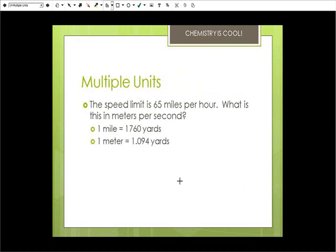Okay, so here's multiple units. The speed limit is 65 miles an hour. What is this in meters per second? Well, that means that we need two units, meters and seconds, and we're starting off with miles and hour. So we start off with 65 miles in one hour. And you can convert either to seconds or to meters first. I don't care. The hour is easiest to get rid of. So that's what I go with.